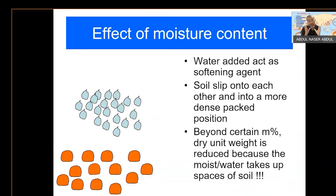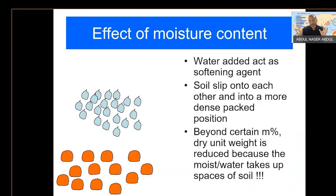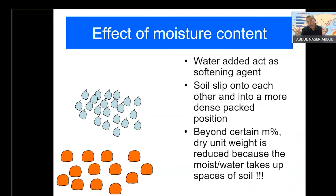Now we are talking about earthwork operations, mostly about compaction. Moisture content plays a big role — if you have very dry soil or very wet soil, it will have an effect on the result of your compaction. You can compact the soil, but sometimes with a very small amount of moisture you can only achieve a certain extent of strength, and with a lot of water or moisture in the soil, the compaction effort can only achieve a certain level of strength.